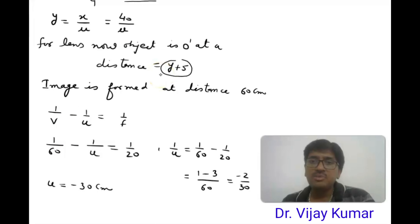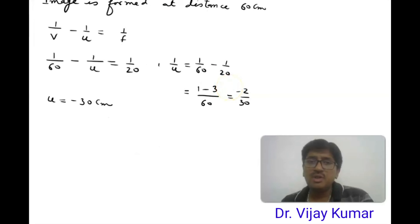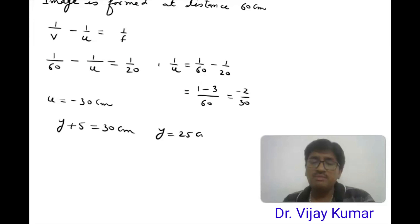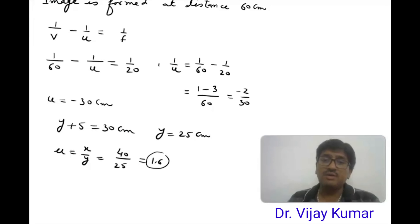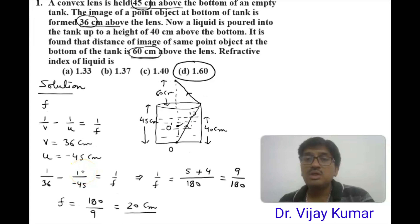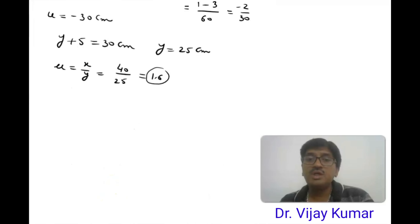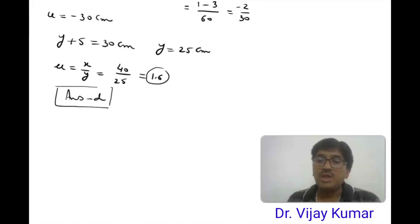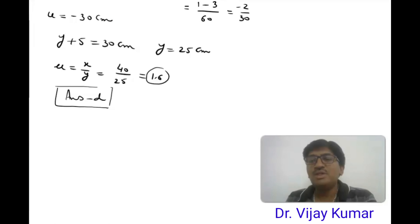Since u is −30 centimeters, the object distance is 30 centimeters. We had set this equal to y + 5, so y + 5 = 30, meaning y = 25 centimeters. Therefore μ = x/y = 40/25 = 1.6. The effective refractive index of the liquid filled in the tank is 1.6, which corresponds to answer D. This is the solution to the problem. We will meet in the next video with a new problem from NSEP 2022, the first-level examination of the Physics Olympiad. Thank you.